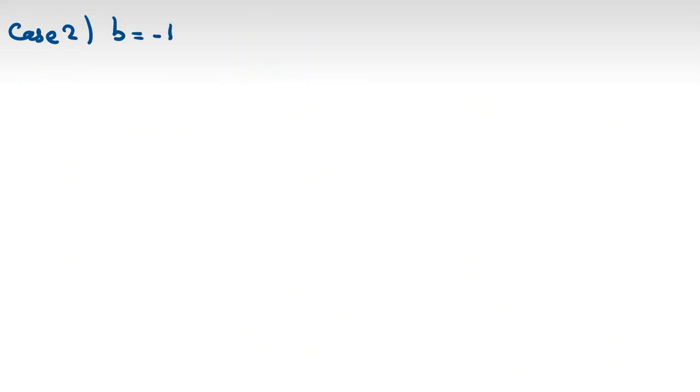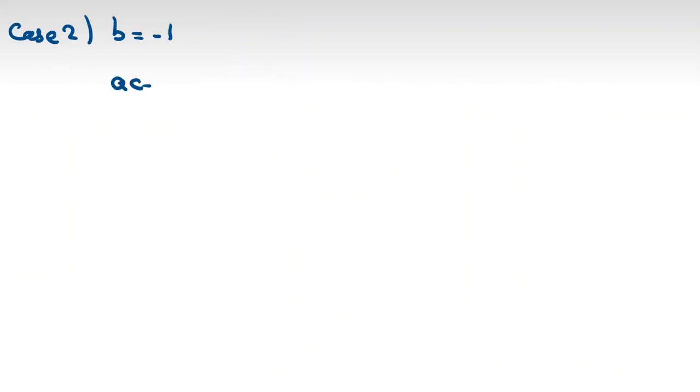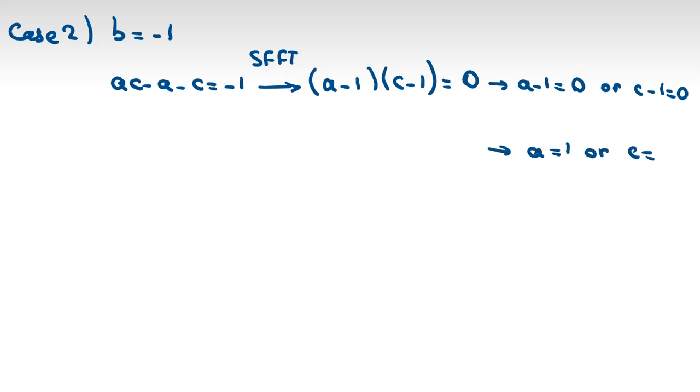Case 2: B is negative 1, and AC minus A minus C is also negative 1. Now, if I again factorize like Simon's favorite factoring trick, A minus 1 times C minus 1 equal to 0. So product of two terms is 0. We conclude A minus 1 equal to 0 or C minus 1 equal to 0. So we conclude A equal to 1 or C equal to 1.